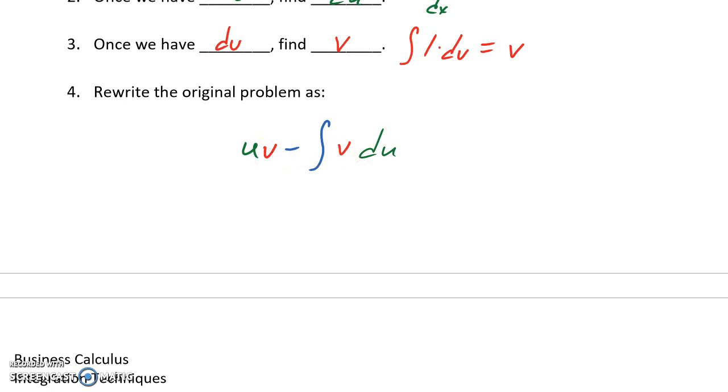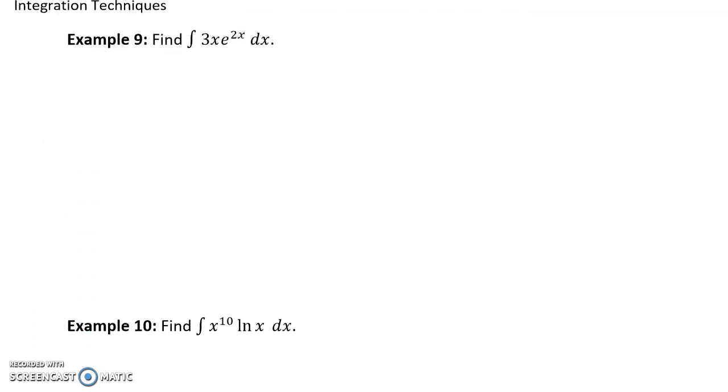In our first example we want to start off by identifying u. We don't have a log function, so what we'll do is let u equal 3x, that algebraic function, and we'll let dv equal e to the 2x dx. We'll take the derivative of both sides of our substitution statement for u to get du over dx is equal to 3, or du is equal to 3.